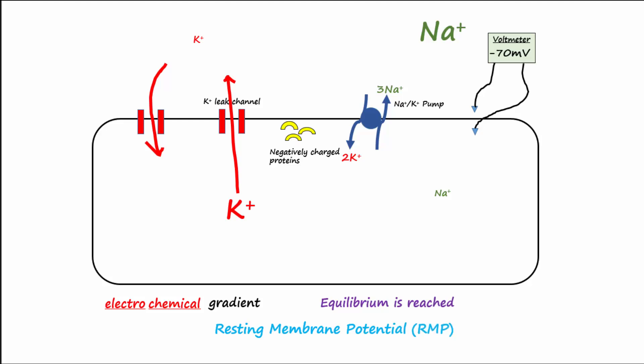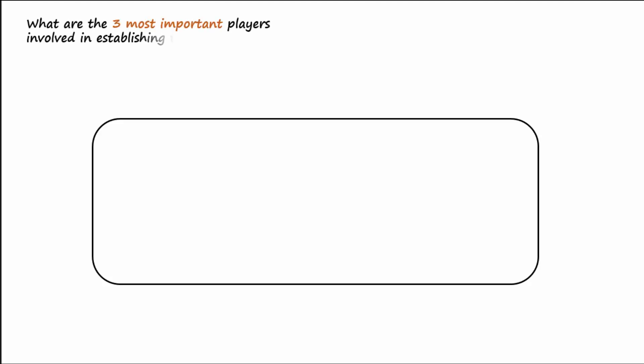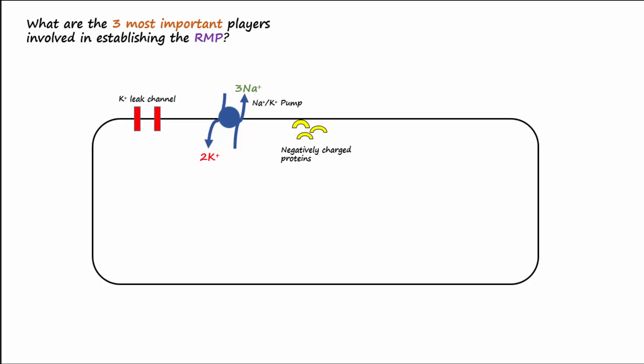The RMP is approximately minus 70 millivolts for neurons. The three main players that allow the inside of the cell to be negative and establish the resting membrane potential are negatively charged proteins, the sodium-potassium pumps, and the potassium leak channels.